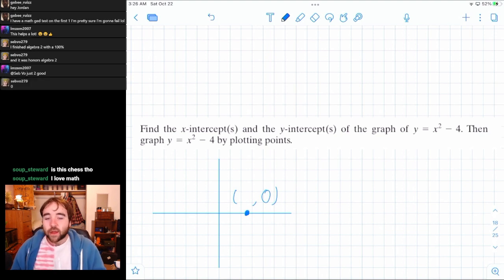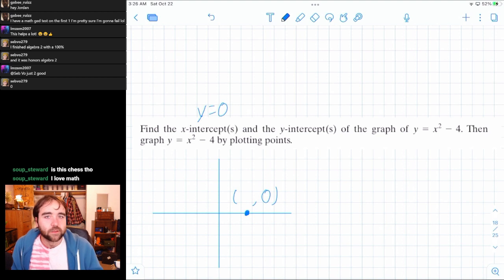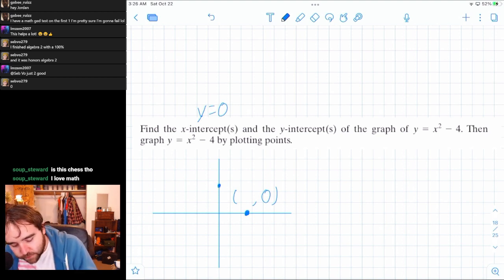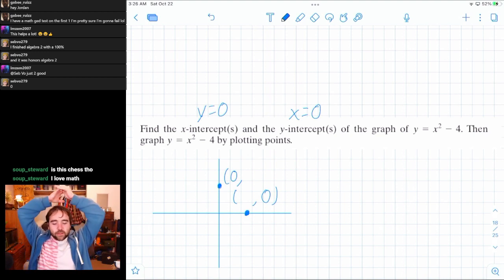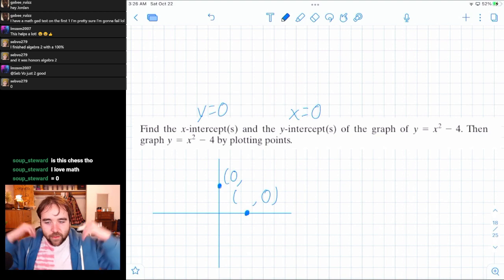So to find an x-intercept, you make the y-value equal to zero and you see what x would equal. And how do you find a y-intercept? The opposite. You make the x-value equal to zero and see what y would equal. And that's critical. That happens in any type of equation, not just a linear equation, not just a parabola. That happens with anything.